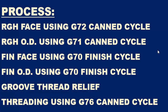Here is the order of the operations that you're going to be using in your CNC lathe program. We're going to start off with a rough turn tool and use a G72 canned cycle to rough the face. Then that same turn tool is going to rough the OD using a G71 canned cycle. Then you're going to make a tool change to finish the face using a G70 finish cycle. That same finish tool is going to finish the OD using a G70 finish cycle. Then you're going to make a tool change to a groove tool and groove the thread relief. And then a final tool change to do the threading using a G76 canned cycle.